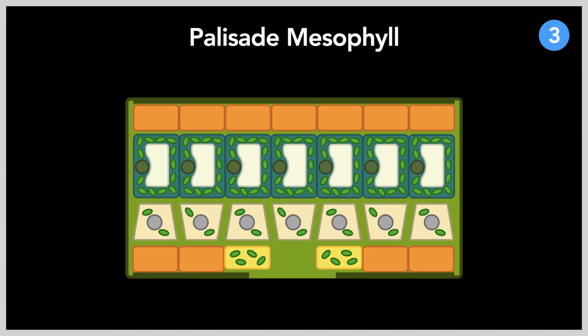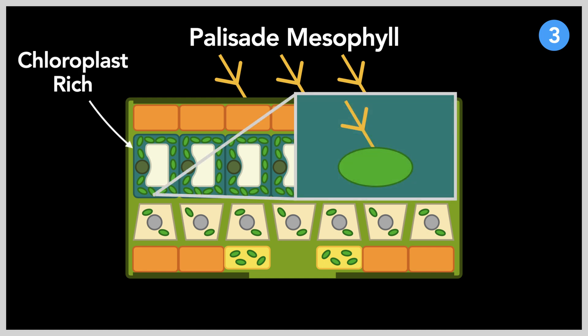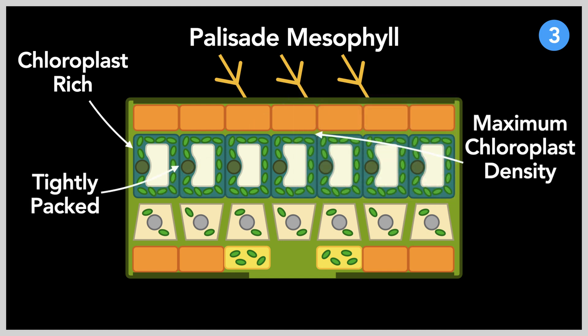The palisade mesophyll's main role is to absorb light energy efficiently. Each one of these cells are packed full of chloroplast, an organelle composed of chlorophyll, and is the site where most of the photosynthesis occurs. These cells are tightly packed and are located right below the upper epidermis. This creates for a greater chloroplast density and maximizes the amount of light energy that penetrates through. Glucose used by the plant is produced right in this very cell because of its characteristics.